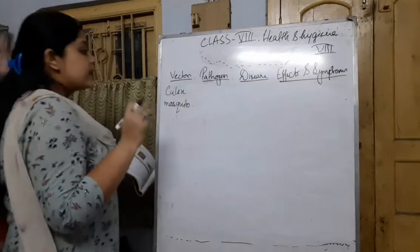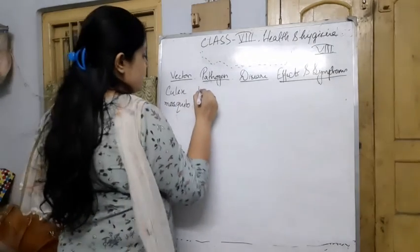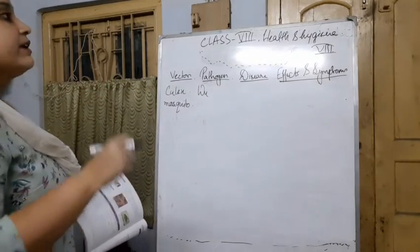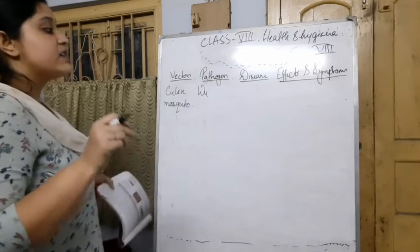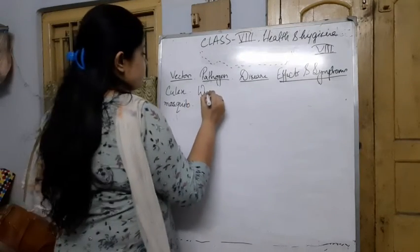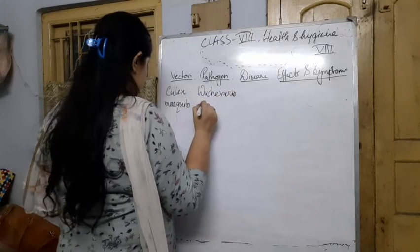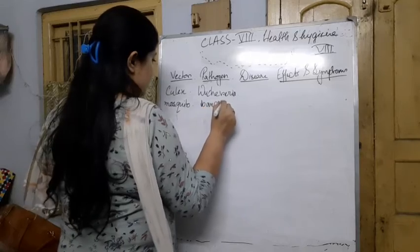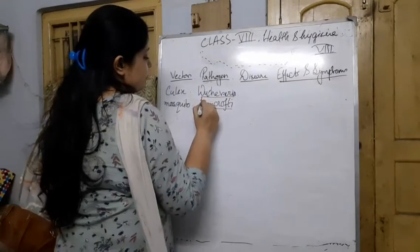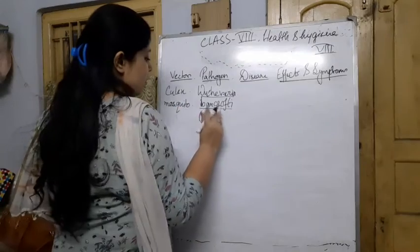The name of the pathogen is Wuchereria bancrofti. Please remember the spelling carefully and make sure you get it right in your examination, because if your spelling is incorrect, marks will be deducted. Wuchereria bancrofti — it is actually a roundworm.